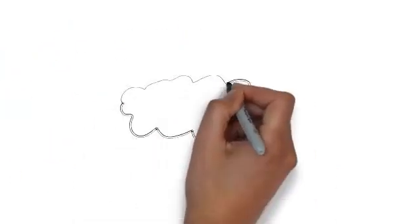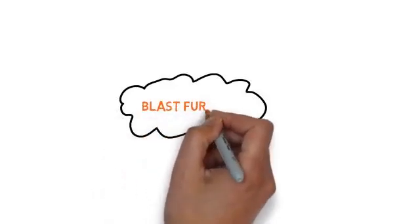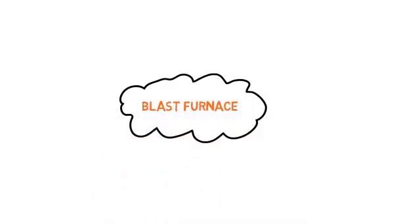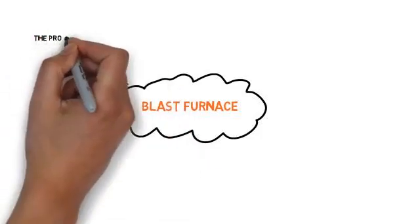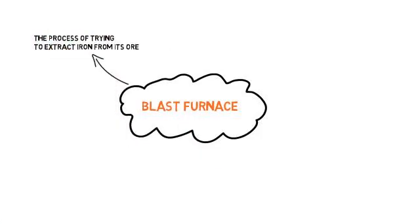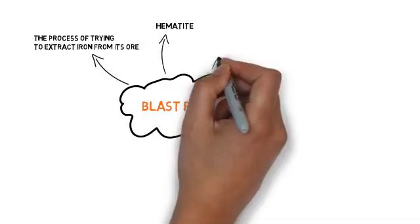One example of reduction by carbon is by using a blast furnace. There are very few blast furnaces in operation at present — in the UK there are only one or two. Reduction by carbon is the process of trying to extract iron from its ore. This is hematite, so we're trying to get the iron from the oxide, as the iron oxide isn't that useful to us.